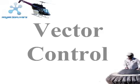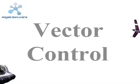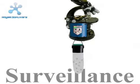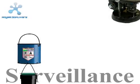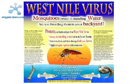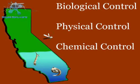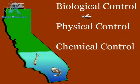Vector control agencies throughout the United States have stepped up their control, surveillance, and public education programs to help combat the threat of West Nile Virus. In California, vector control districts employ integrated mosquito management techniques that effectively reduce the mosquito population while minimizing the impact to the environment.